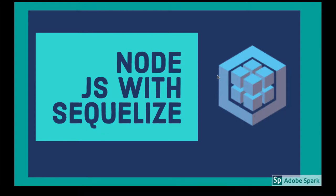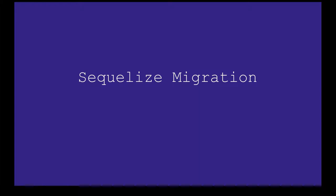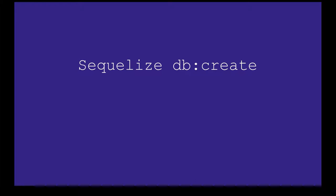Hello and welcome everyone. In this video we will try to understand Sequelize migrations and how we can use Sequelize commands: dbdrop, dbcreate, dbmigrate, dbseed — all these commands and what migration actually is. The Sequelize init command, which we have already seen, initializes the folders and directory structures with the config.json file.